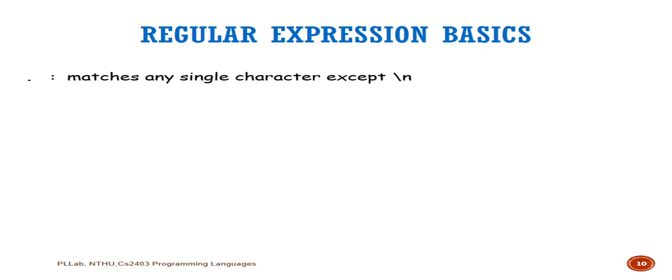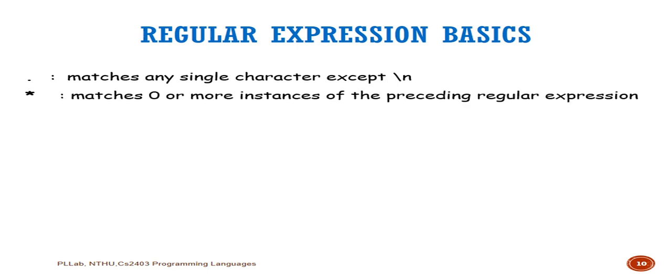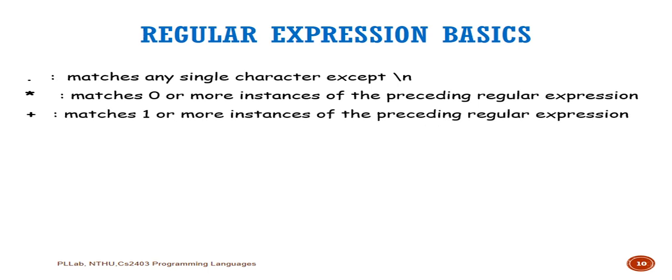These are the regular expression basics used in Lex. A dot (.) matches any single character except newline (\n). The star (*) means zero or more instances of the preceding regular expression. The plus (+) means at least one occurrence — for example, a* may match epsilon or any number of a's, whereas a+ must contain at least one 'a'.